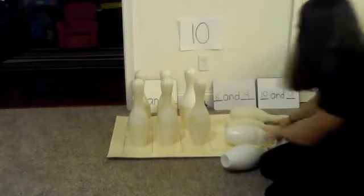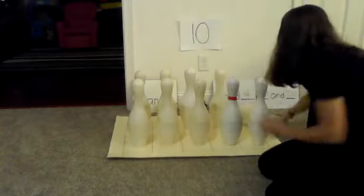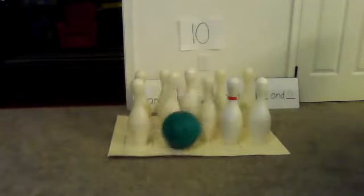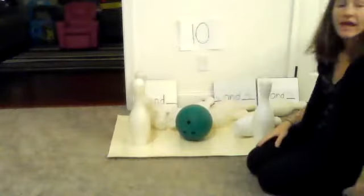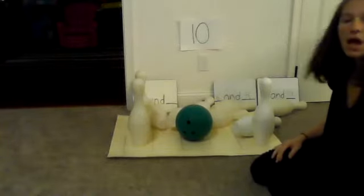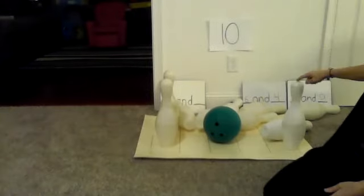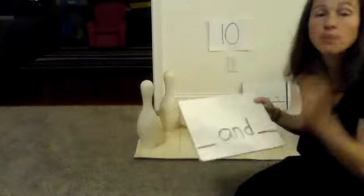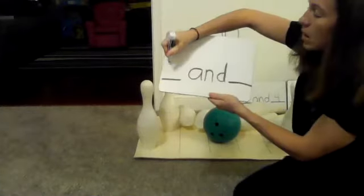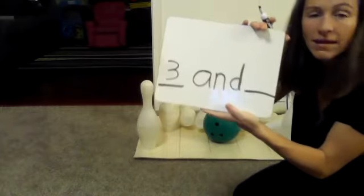So far we have two number pairs that make 10. Let's see if we can get another one. I'm going to reset the pins — reset, reset, reload. And it's time to bowl again. Three, two, one. Now look what happened, boys and girls — look what happened when I bowled. How many bowling pins are standing up? I see one, two, and three. I'll touch them to prove it: one, two, and three. So the first number I'm going to put for my first part is the number three. Around the tree, around the tree — that's how I write the number three.